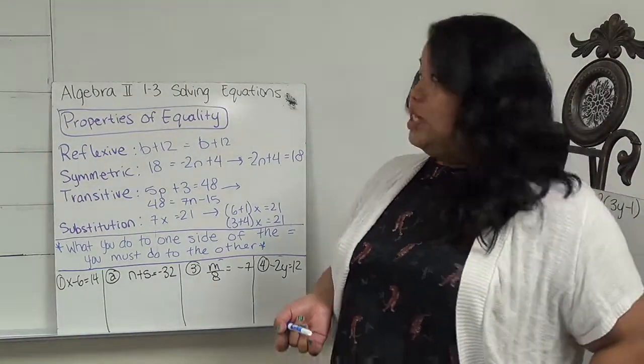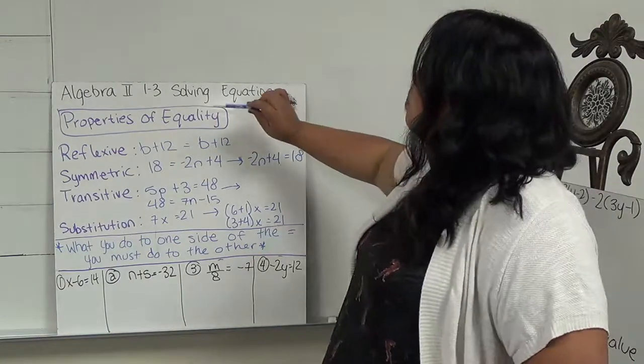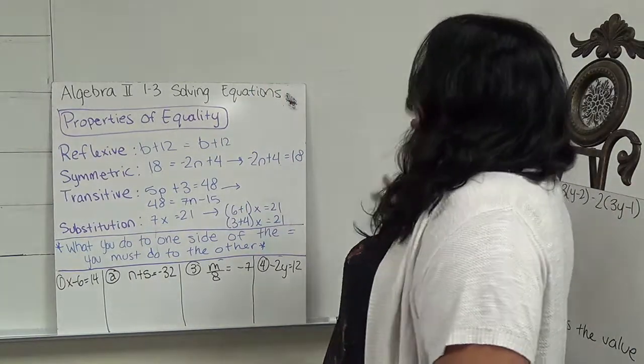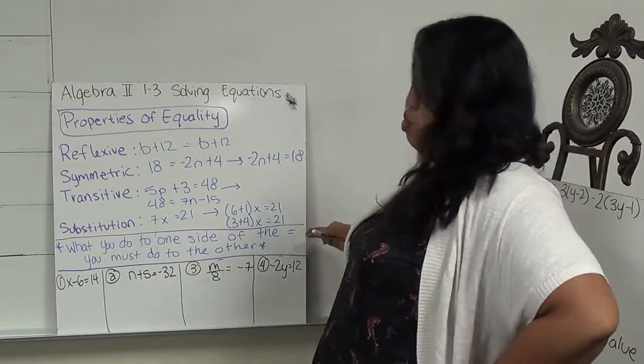The previous sections that you've been dealing with were just simplifying equations. When we're dealing with solving, there's an equal sign. With the equal sign, there's new properties of equality, and then there's one main rule.